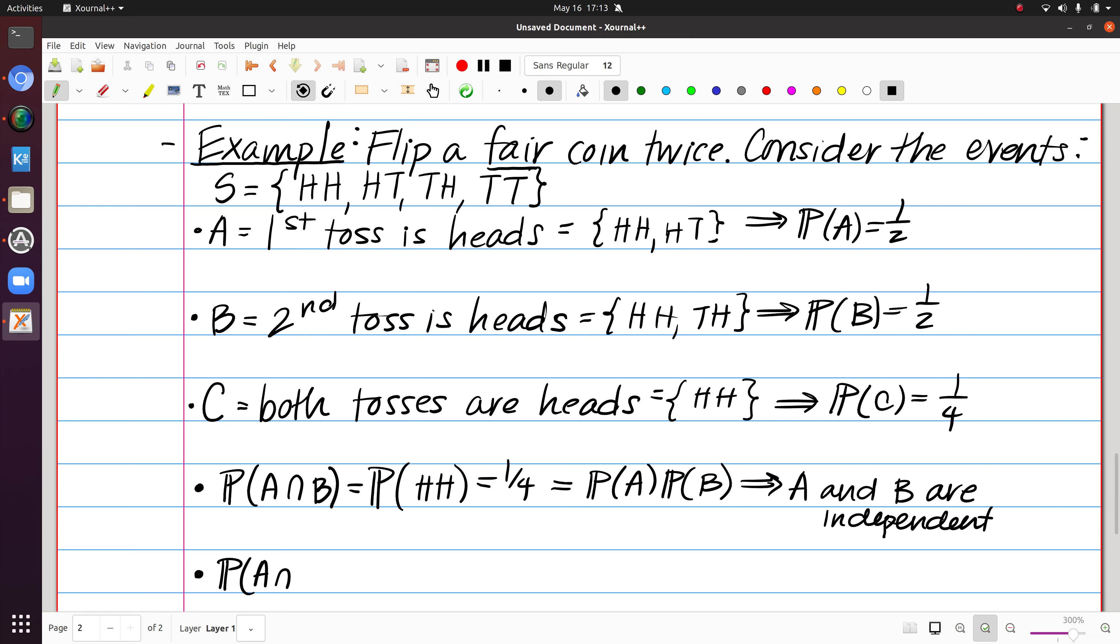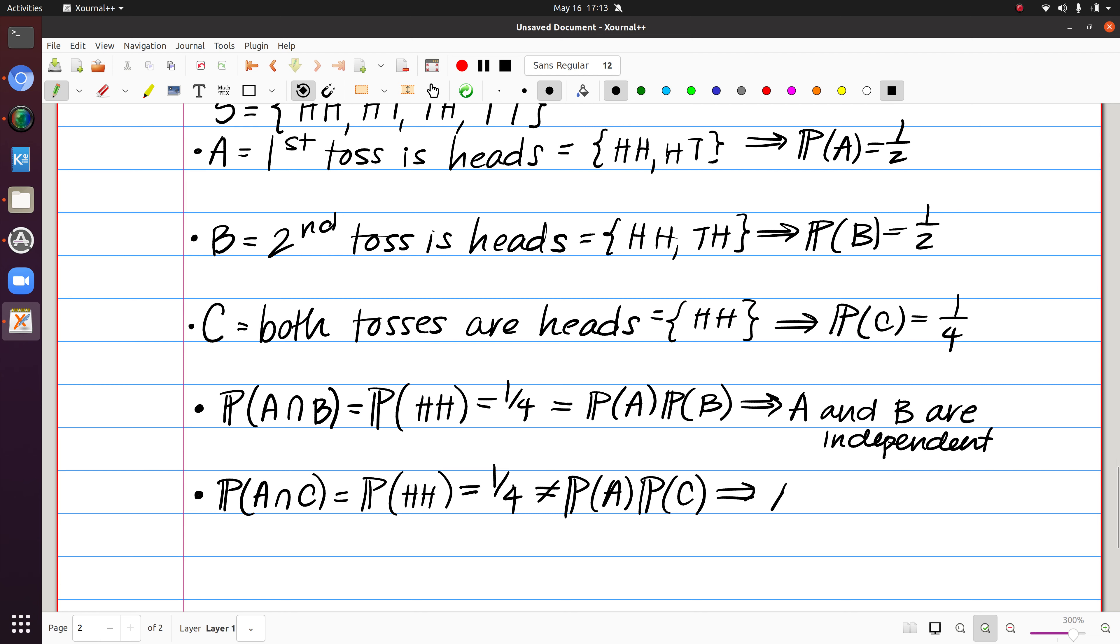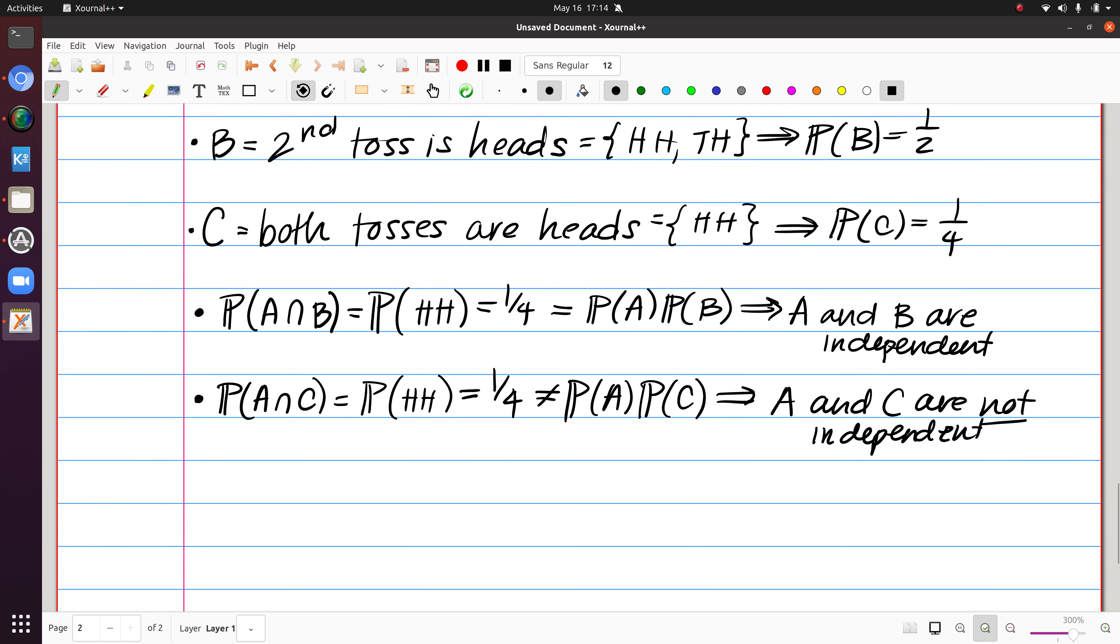If instead I look at, say, A and C, the probability of A and C is likewise the probability that you see heads, heads. That's the only outcome that satisfies both of those. But notice that, yes, that's one fourth. But that is not equal to one half times one fourth. So this formula fails. This is a way for me to confirm that A and C are not independent. This can also be said that A and C are dependent. And so here we see, again, this necessary equation in order for us to make this claim of independence.